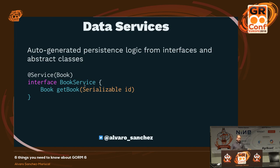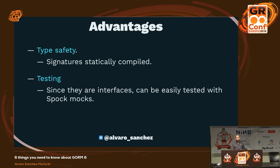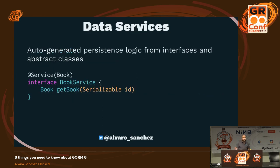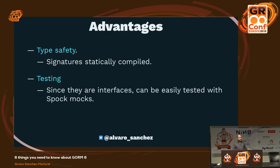I have here an interface called BookService. The way we tell GORM which domain class this service applies to is with the @Service annotation, specifying the domain class. We define methods in an interface — there's no implementation. The advantages of this approach: first, it's type-safe, because all signatures of your interfaces and abstract classes are statically compiled. If you make a mistake, it'll throw a compilation error. They can be easily tested because they are interfaces — in a unit test, for instance, you could mock the getBook method and return a hard-coded book.